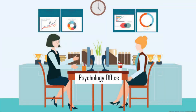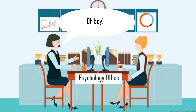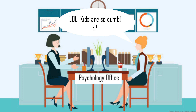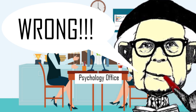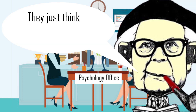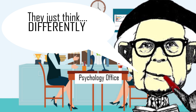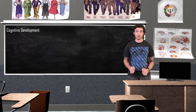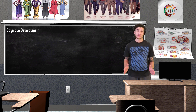Prior to Piaget's work, the common belief in the field of psychology was that children are less competent thinkers than adults. Piaget showed that young children reason in wildly illogical ways about problems where the solution might be pretty obvious to an adult. Piaget believed that the driving force behind intellectual progression is our struggle to make sense of our experiences.